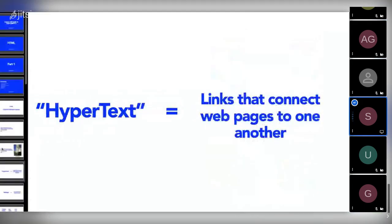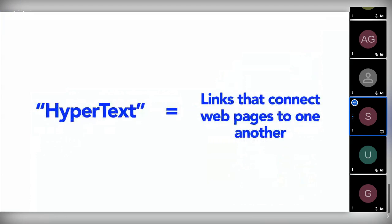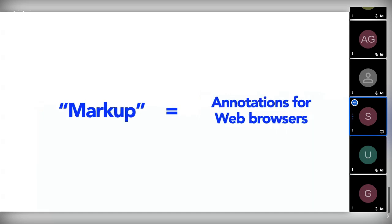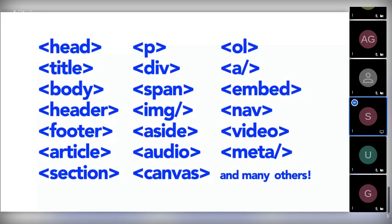The 'hypertext' in Hypertext Markup Language refers to links that connect web pages to one another, either within a single website or between websites. Links are a fundamental aspect of the web — by uploading content and linking to pages created by other people, you become an active participant in the World Wide Web. Markup is what we use to annotate text, images, and other content for display in a web browser.